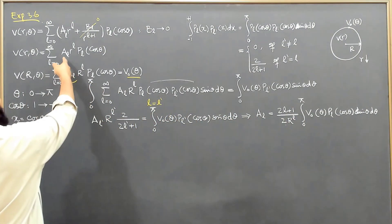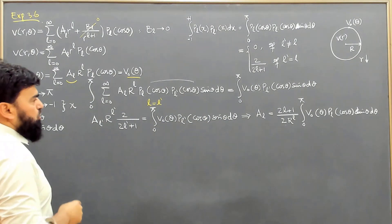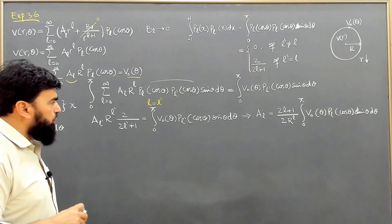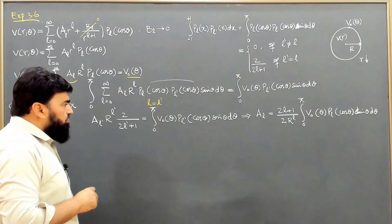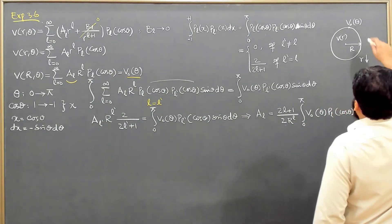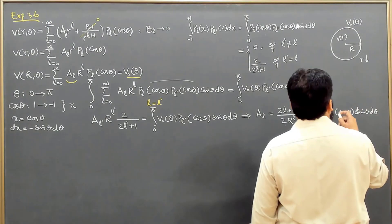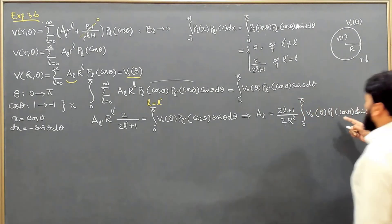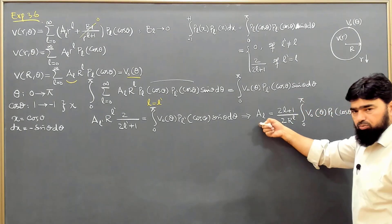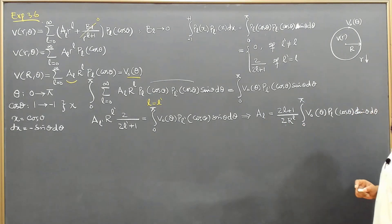We can put this A_l back into the solution, which gives P_L(cos θ). If V₀(θ) is specified, we can calculate this integral, find A_l, and then write the final solution.